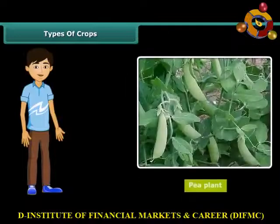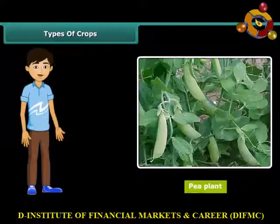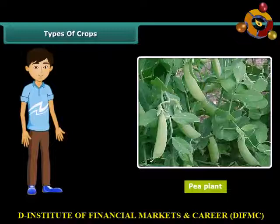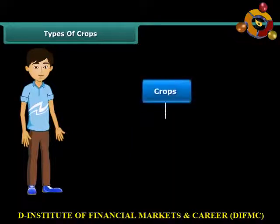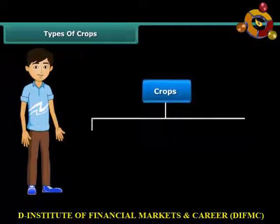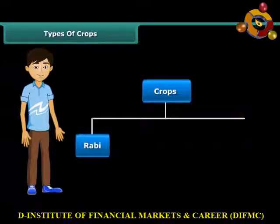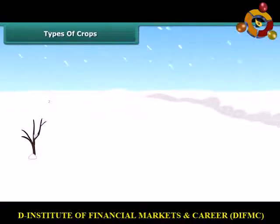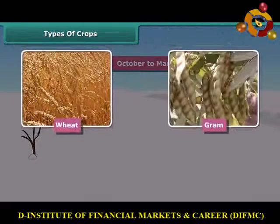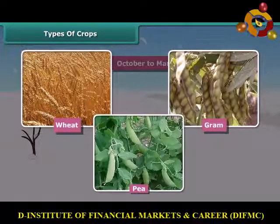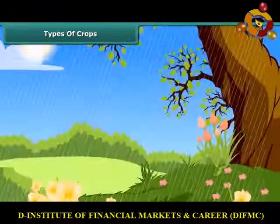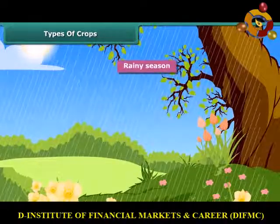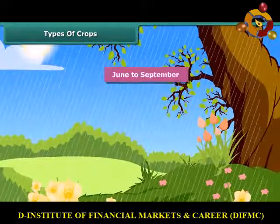If you wish to grow a pea plant in the hot season, you can't do it. In India, crops are broadly classified into two categories on the basis of the season they are grown in — Rabi crops and Kharif crops. Rabi crops are usually grown in the winter season from October to March. Wheat, gram and peas are examples of Rabi crops. Kharif crops are usually grown in the rainy season, generally from June to September.